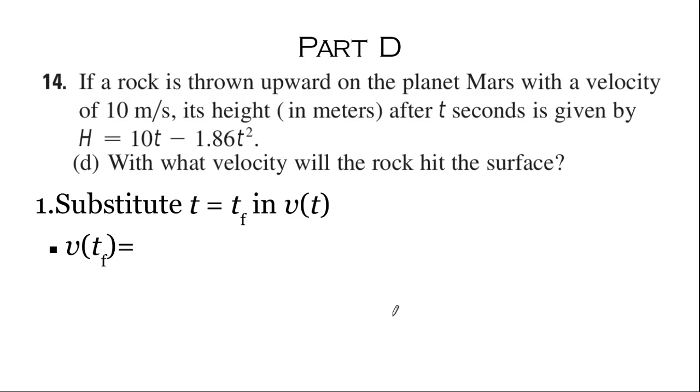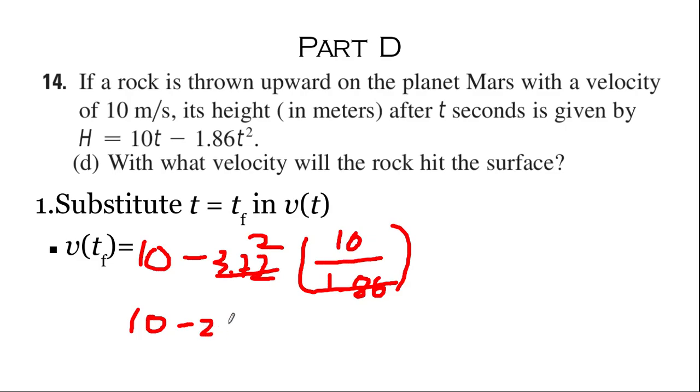Okay, and then we're going to substitute the final time into the velocity, so we have 10 minus 3.72 times 10 over 1.86. Since we multiplied 2 times 1.86 to get 3.72, these two can cancel and we just get 2 over here, so we just have 10 minus 20.